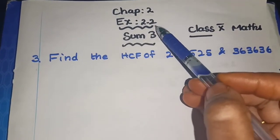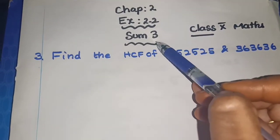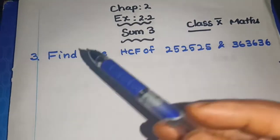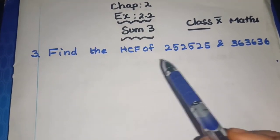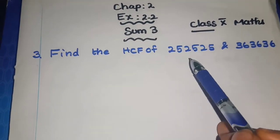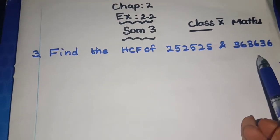Chapter 2, Exercise 2.2, Sum 3. We are going to see the third sum now: find the HCF of 252525 and 363636.